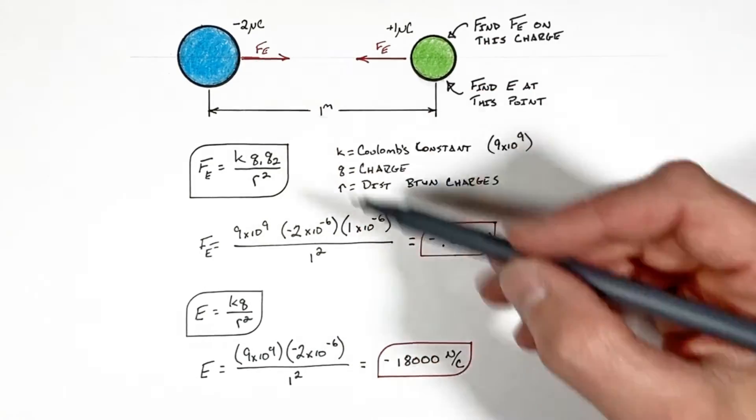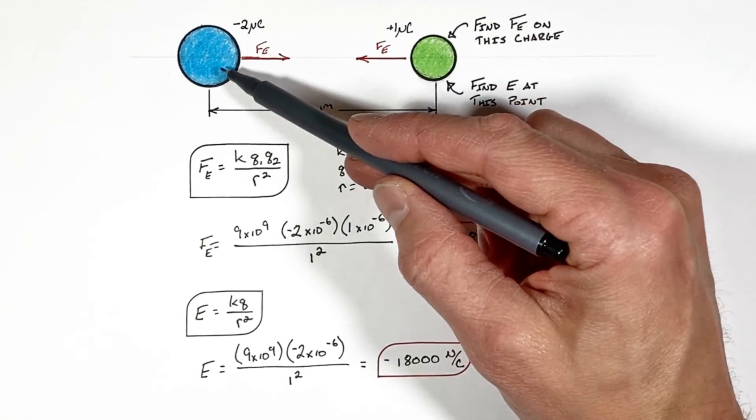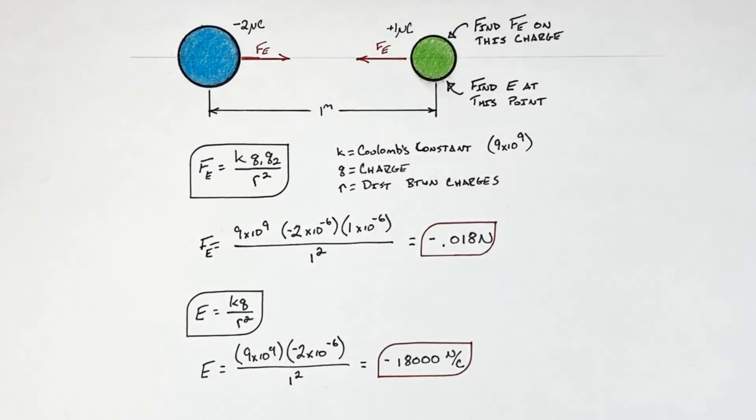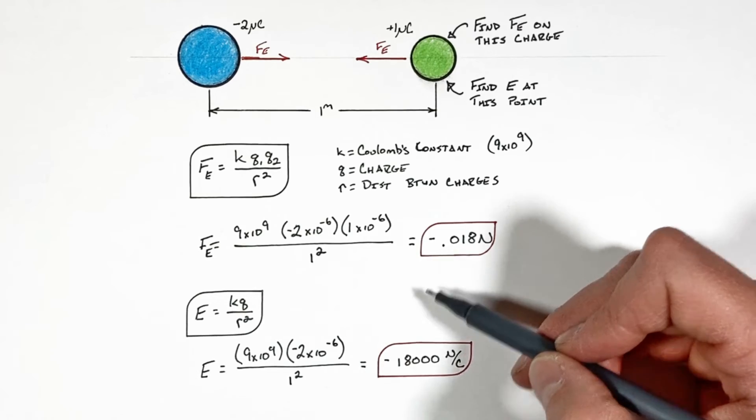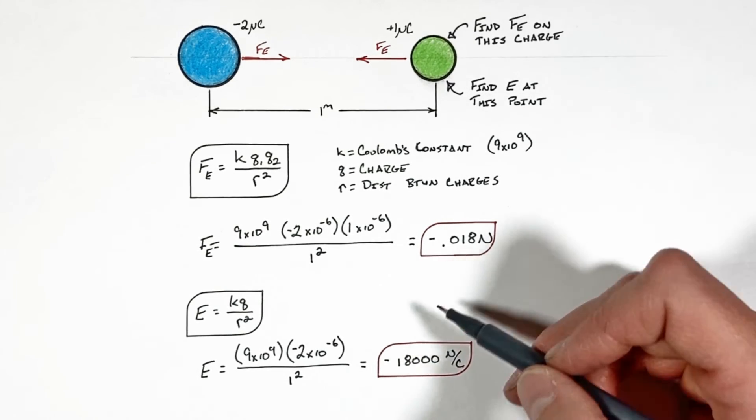If the electric field is negative, that means the positive charge would be pulled towards this charge. If it was positive, that means the positive charge would be repelled. So the signs on both of these are not telling us about actual direction, it's just telling us about attraction versus repulsion.